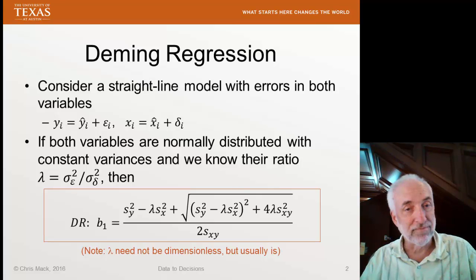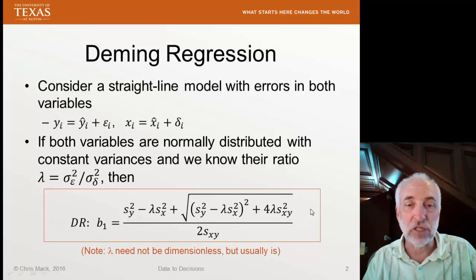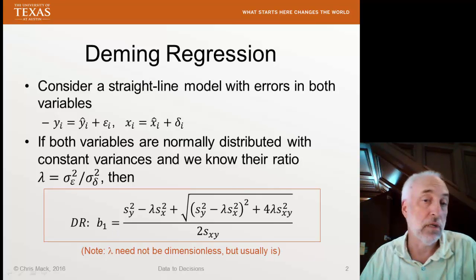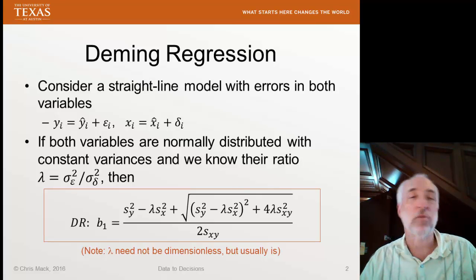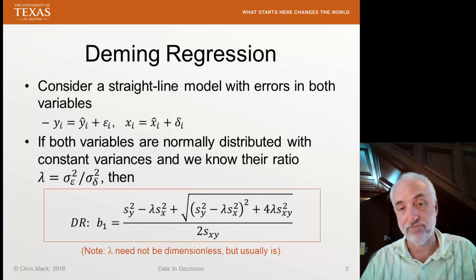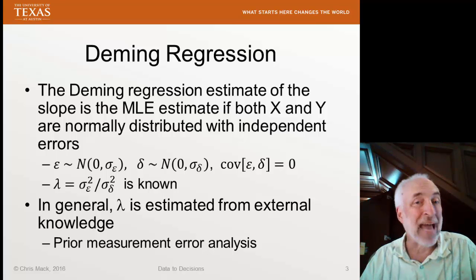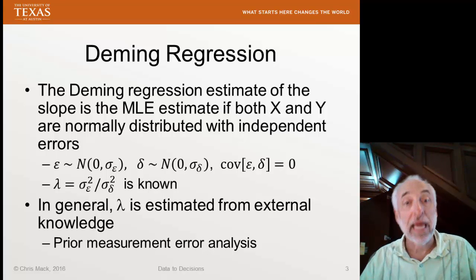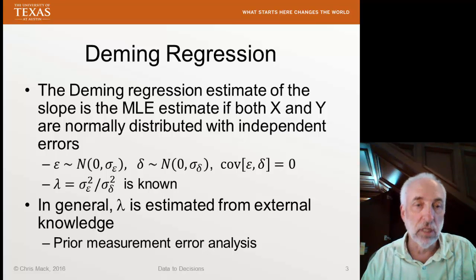In orthogonal regression, if I let lambda equal one, I get the exact same expression for the slope as orthogonal regression — because orthogonal regression assumes the errors in x and the errors in y are identical. The Deming regression is the maximum likelihood estimator when both x and y are normally distributed and independent, so their errors aren't correlated, and the ratio of variances is known.